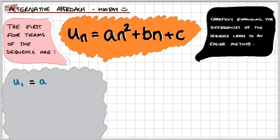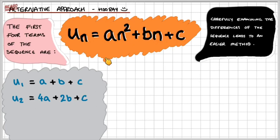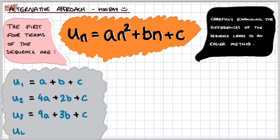For the first term, if we substitute n equals 1, we have 1 squared which is 1, so 1 times a is a, 1 times b is b, and then we have c. For the second term, we substitute n equals 2: 2 squared is 4, that makes 4a, and 2 times b is 2b, and then we have c. For the third term, substituting n equals 3: 3 squared is 9, that's 9a, and 3 times b is 3b, and we have c. Finally, substituting n equals 4: 4 squared is 16, we have 16a, and 4 times b is 4b, and then we have c.